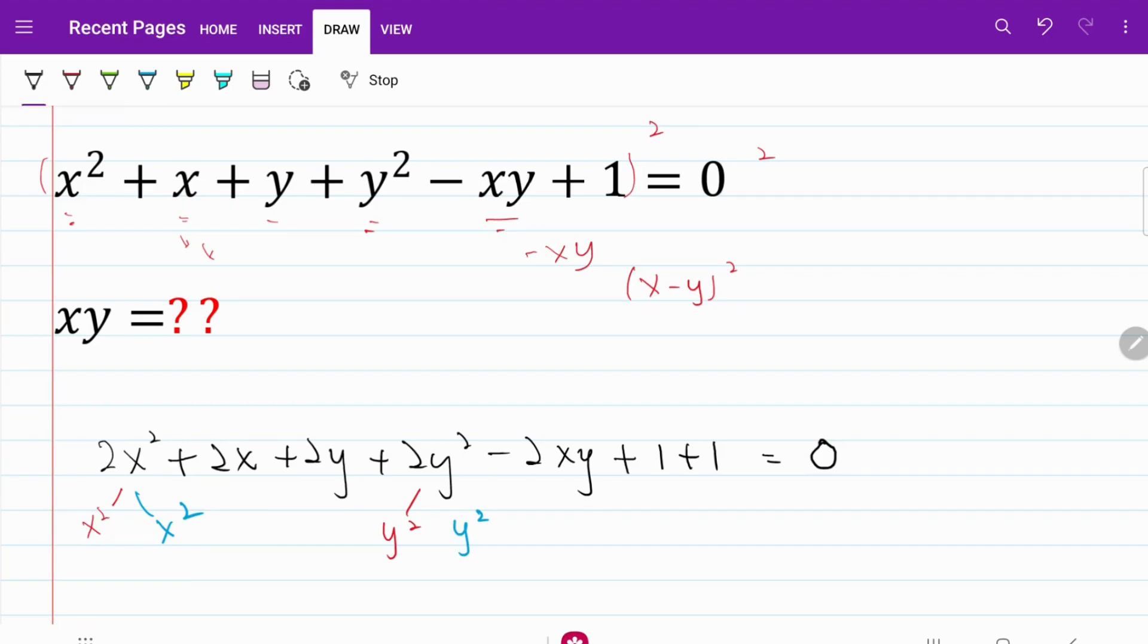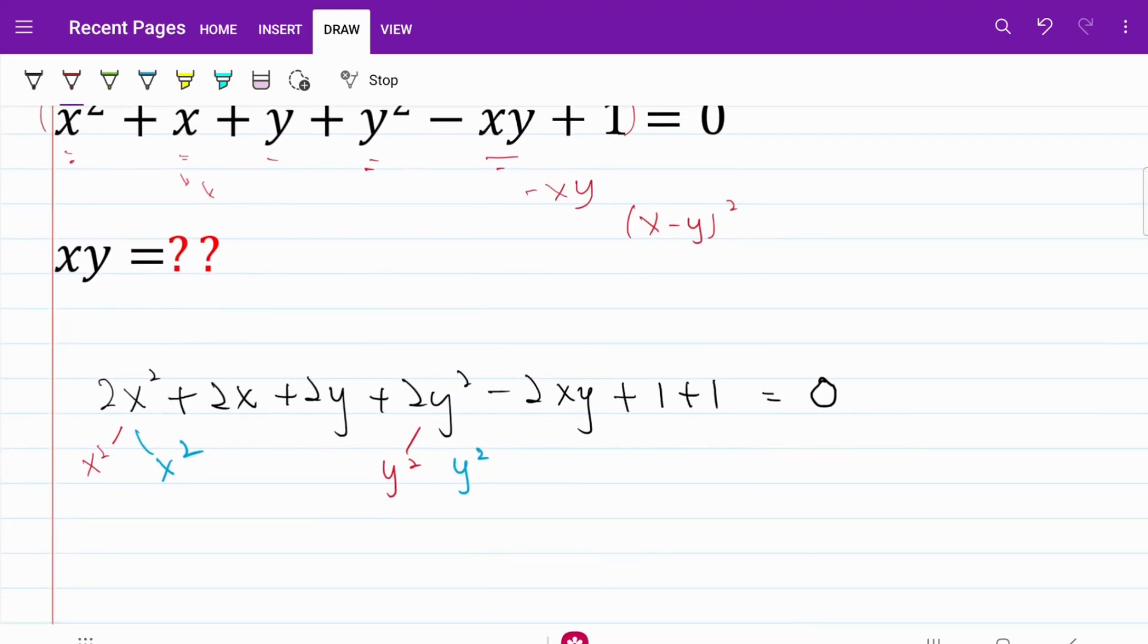Let's go ahead and do some factorization. So what I have now is red color x square minus 2xy plus red color y square, that's the first component, plus blue color x square plus 2x plus 1 plus blue color y square plus 2y plus 1, that's equal to 0. Let's check whether we have left out any components. I don't believe I did.